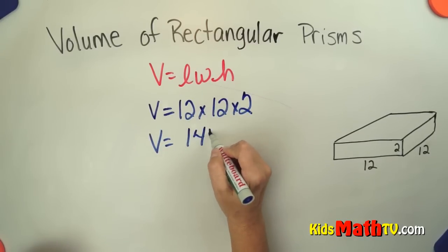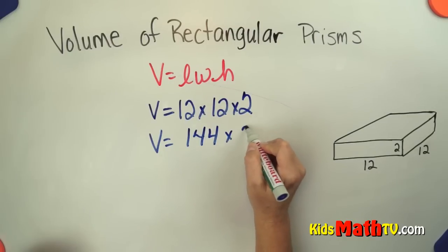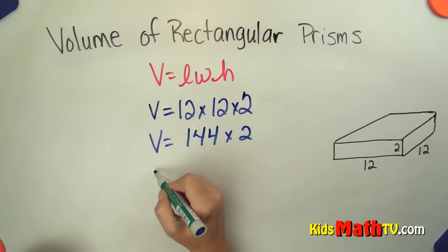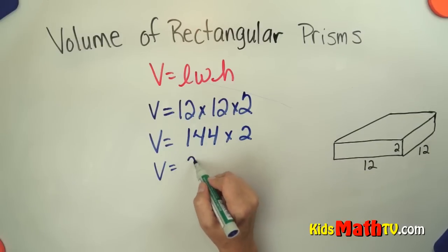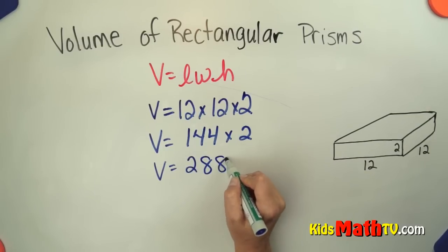12 times 12 is 144. We're going to multiply that by 2. And so we have 144 times 2 is 288.